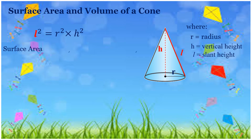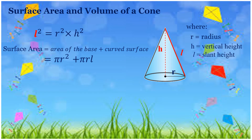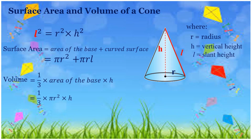To get the surface area, we will be adding the area of the base and the curved surface. Since the base is a circle, we will be having pi R squared plus pi R L. For the volume, it is equal to 1 third times the area of the base times height. The area of the base is pi R squared, so we get 1 third times pi R squared times H.